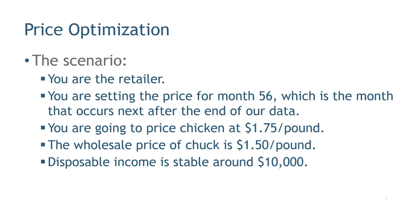So you're going to be the retailer in this situation. You're setting price for month 56 in the data. Why month 56? Because that's the next month in the data. The data that we estimate the model on goes all the way through month 55. And now we're going to use all 55 months of that data to try to say, what should we do in month 56? What price should we set?